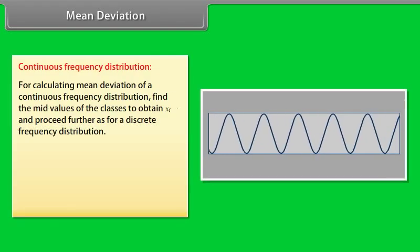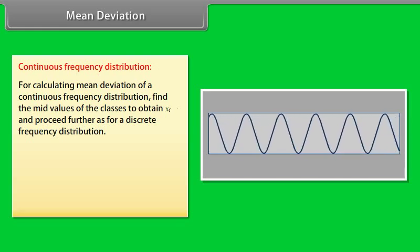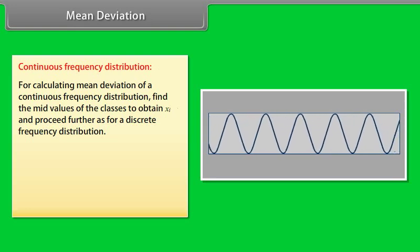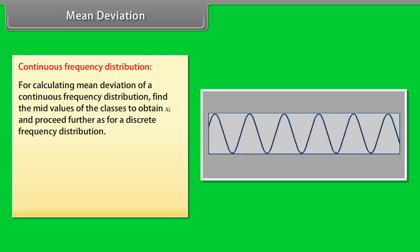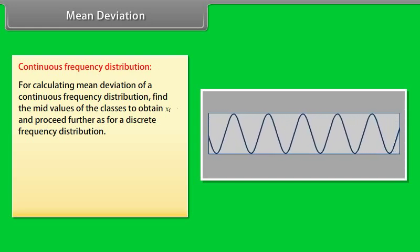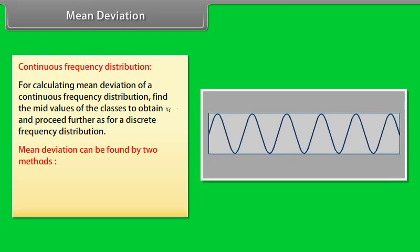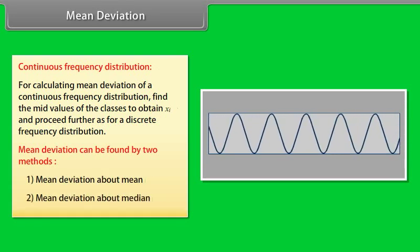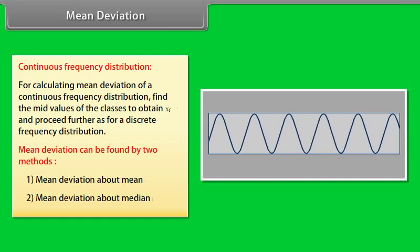For calculating mean deviation of a continuous frequency distribution, find the mid values of the classes to obtain Xᵢ and proceed further as for a discrete frequency distribution. In continuous frequency distribution the frequency never breaks. Mean deviation can be found by two methods: mean deviation about mean, and mean deviation about median.